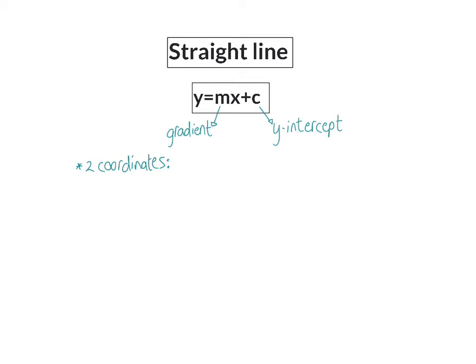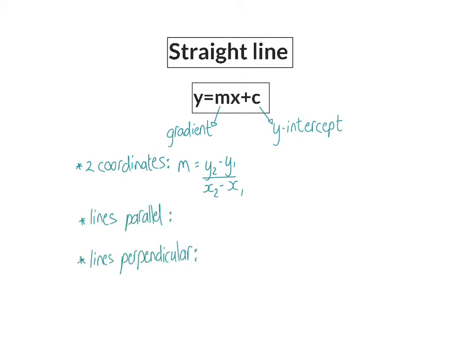If two coordinates are given, we can use the gradient formula to calculate the gradient. Or they can tell you that two lines are parallel or perpendicular to each other, and then we know that the gradients are the same, or the product of the gradients equals minus 1.